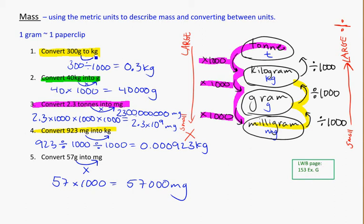Going from grams to kilograms — that's little to big, so I divide. Any time you go up the scale, you need to divide. Any time you're going down, you need to multiply. If you have to go between more than one step, multiply by 1,000 for every step you take. Going from tons to milligrams, that's times 1,000, times 1,000, times 1,000. Remember: for the main mass measurements — milligram, gram, kilogram, and ton — there's a difference of 1,000 between each. The steps are always the same size: 1,000 between each.